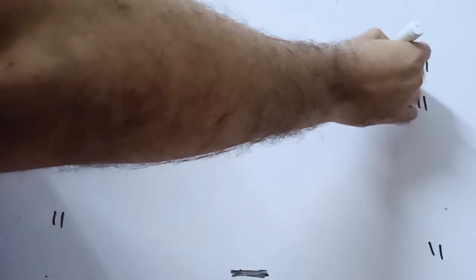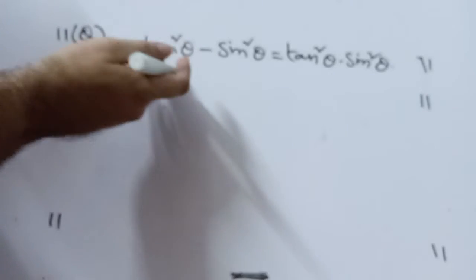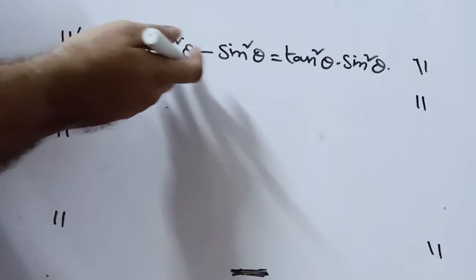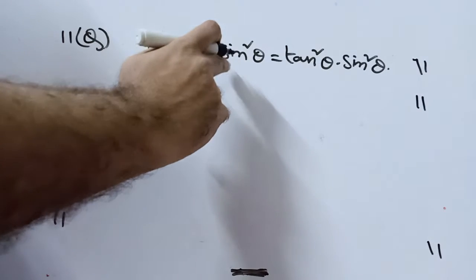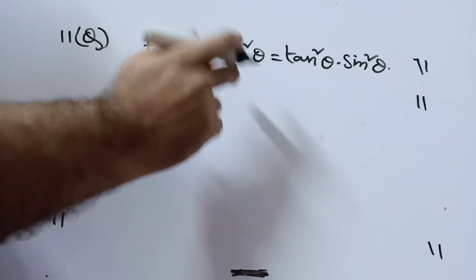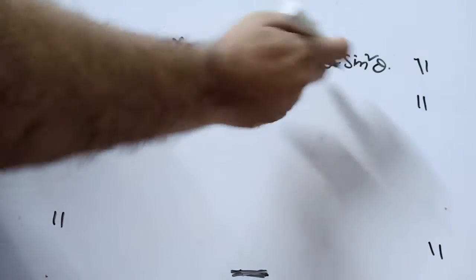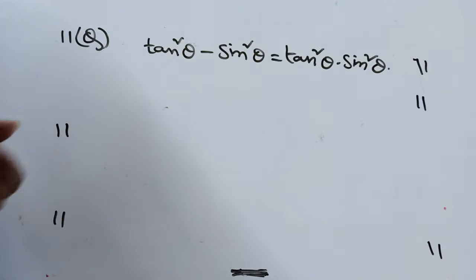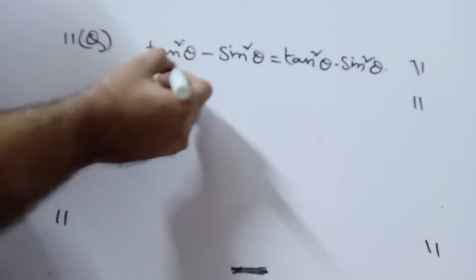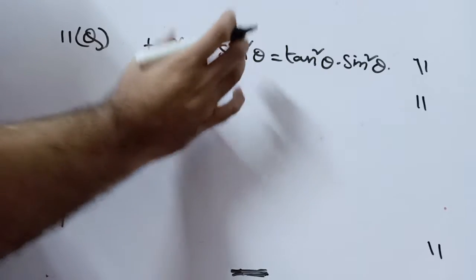You can see my earlier lectures how I proved this. You just take tan square theta as common. You get tan square theta times 1 minus cos square theta, which is tan square theta times sin square theta. You can see that in one of my videos.